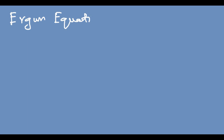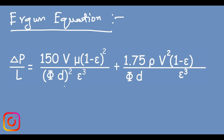In order to account for this pressure drop mathematically, what we use is the Ergun equation. The Ergun equation is a bit lengthy, but in reality it is a combination of two smaller equations which we will see later on. This is what the Ergun equation looks like.